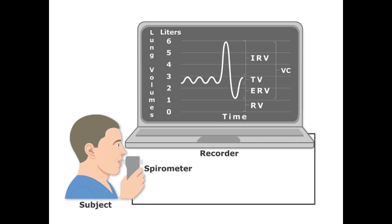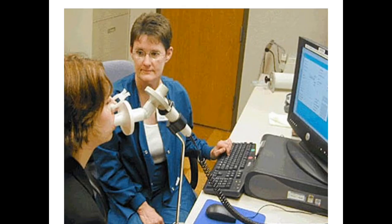This is the spirometer and how we use it. It has a mouthpiece which is not tightly held by the teeth and not obstructed by the tongue. We breathe in and breathe out, and the spirogram — the graph — measures all the volumes, from which we calculate the capacities.